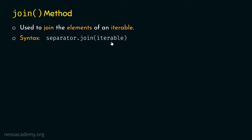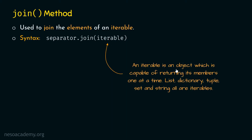Now let's understand what is the meaning of an iterable. An iterable is an object which is capable of returning its members one at a time. In other words, we can access individual members of an iterable easily. List, dictionary, tuple, set, and string — these are all iterables. String is an iterable because we can access individual characters of a string.